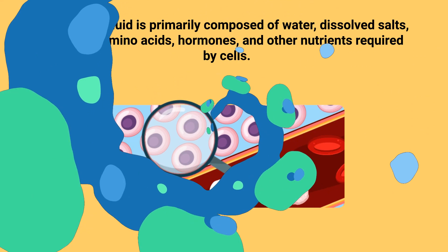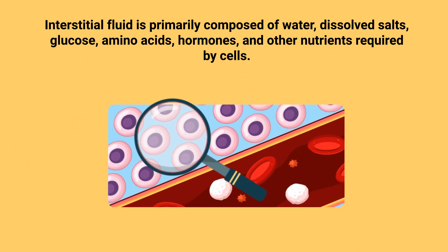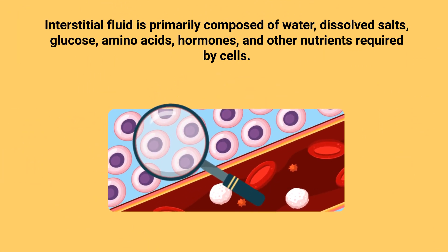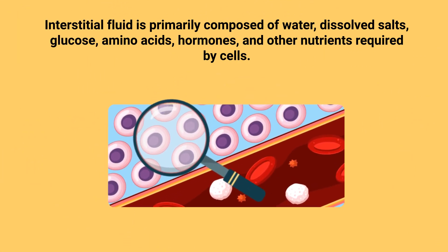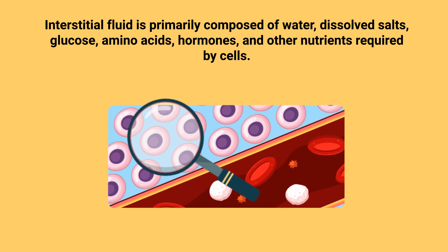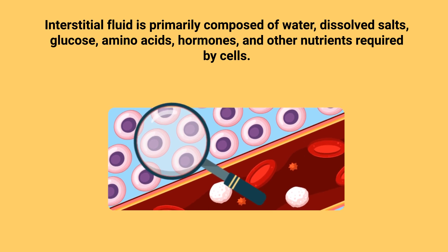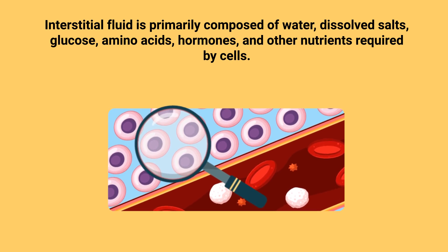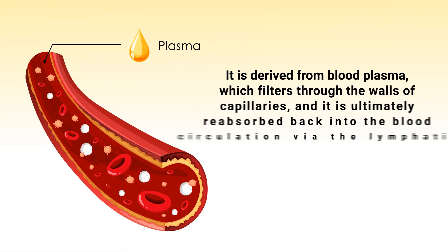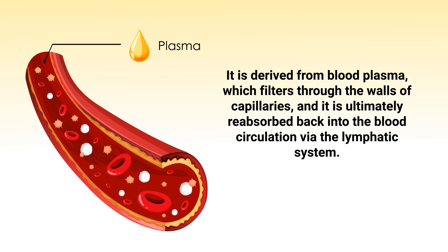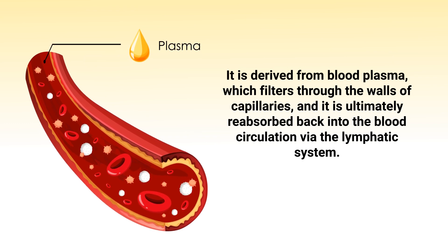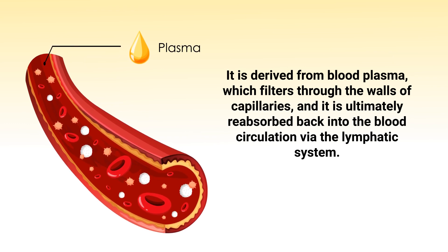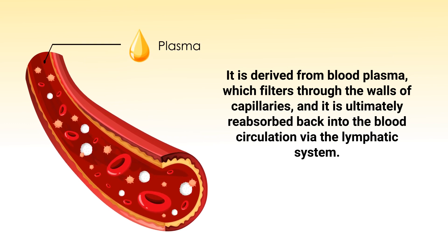Interstitial fluid is primarily composed of water, dissolved salts, glucose, amino acids, hormones, and other nutrients required by cells. It is derived from blood plasma, which filters through the walls of capillaries, and it is ultimately reabsorbed back into the blood circulation via the lymphatic system.